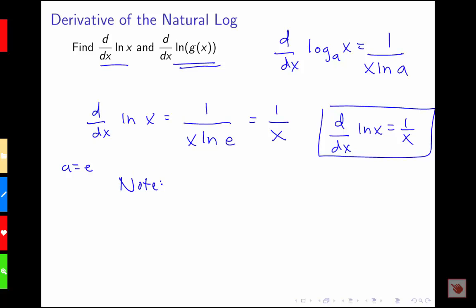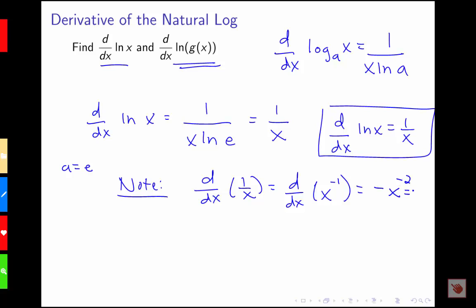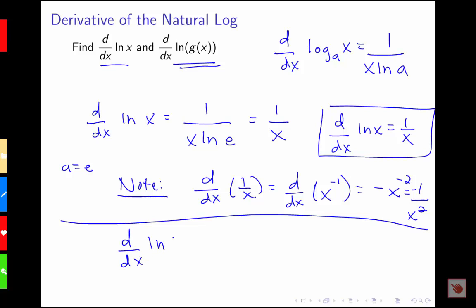A common mistake when dealing with this derivative rule is to mistakenly think that the derivative of 1 over x is log x. Remember that the derivative of 1 over x uses the power rule because 1 over x is x to the negative 1, so the derivative of x to the negative 1 is negative x to the negative 2. So the derivative of 1 over x is negative 1 over x squared, whereas the derivative of the natural log of x is 1 over x.